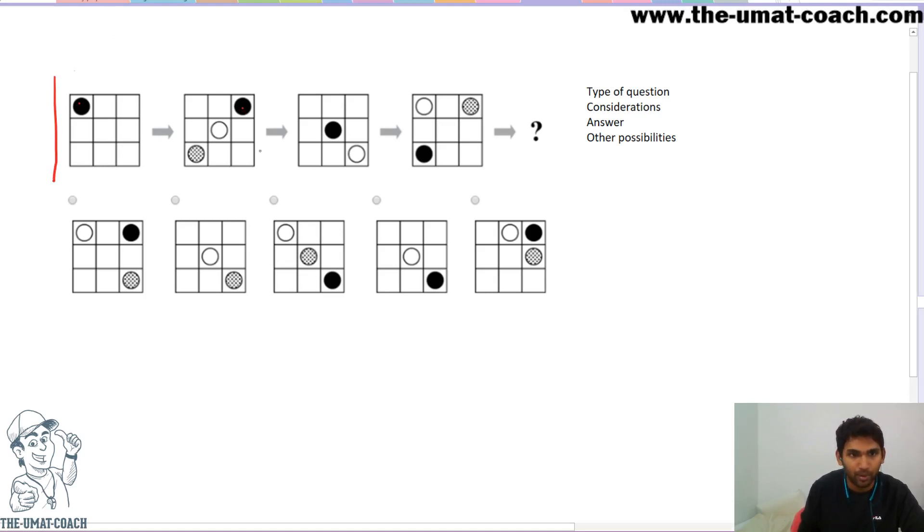So we have a black ball, a white ball, and a shaded one. Let's now focus on one component at a time. Let's focus on the black one and look at what's happening between figures A and B. So between A and B it's just moving two steps to the right.